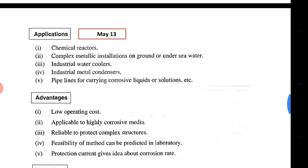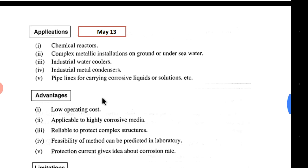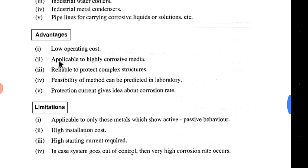Regarding applications: chemical reactors or continuous chemical reaction processes can be protected, since they involve very corrosive chemicals and environments. Complex metallic installations, underground and undersea water systems, industrial water coolers, industrial metal condensers, and pipelines for carrying corrosive liquid fuels can all be protected using this method.